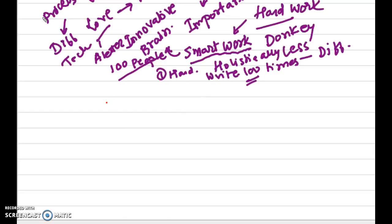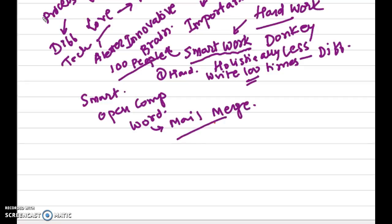Now what the smart employee will do: smart employee will open computer, use Microsoft Word, and might be knowing the technique of mail merge. He will use that mail merge technique where the letter will be written one time, and using the form techniques only data will be filled.